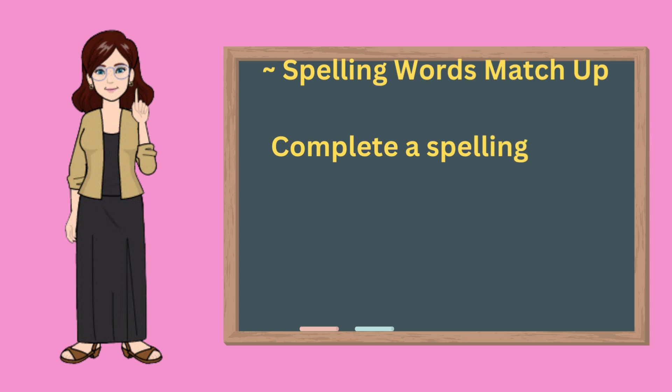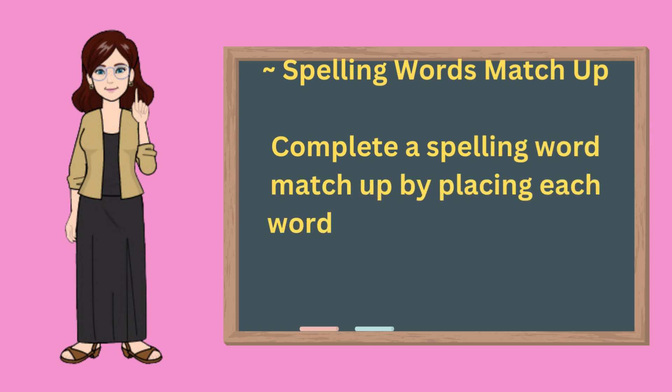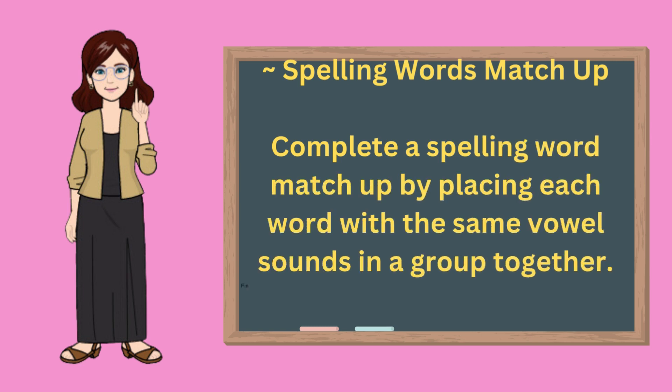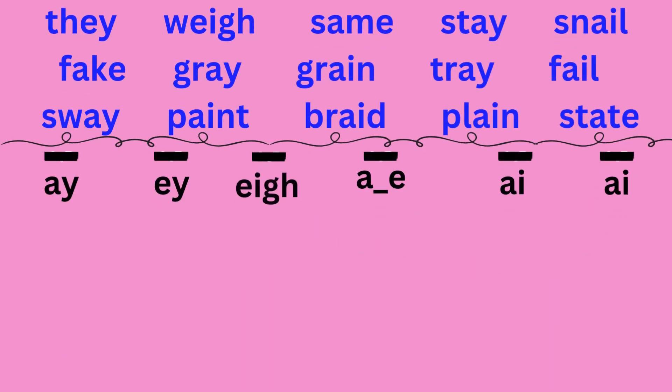Spelling word matchup. Complete a spelling word matchup by placing each word with the same vowel sounds into a group together. The words in this lesson are they, weigh, same, stay, snail, fake, gray, grain, tray, fail, sway, paint, braid, plane, state. Place each word in one of the long A columns: A-Y, E-Y, E-I-G-H, A with final E, and A-I. Make sure to sound each word out before placing them in the correct column.